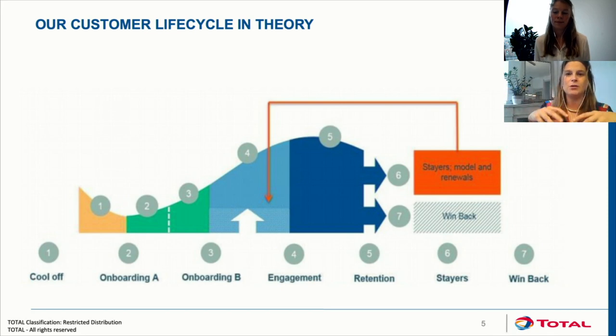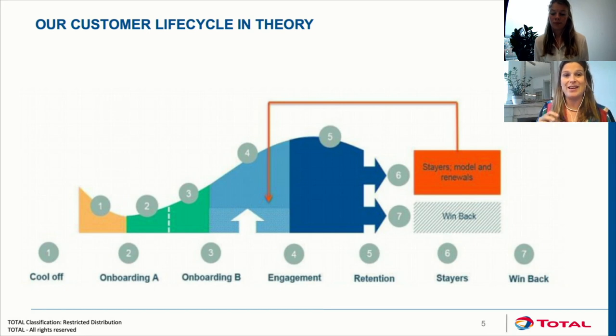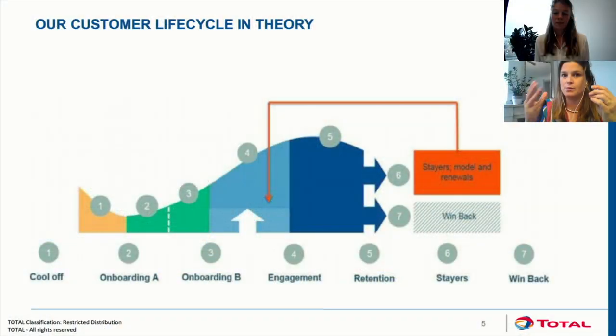In the engagement phase, we build a relationship with our customers — the first errors have hopefully been smoothed out. The next step in the customer lifecycle is retention, where the contract almost ends and we want to offer a renewal. If they renew, they go back to engagement. We consider this a successful customer journey. Unsuccessful is when they move from retention to win-back and switch to another supplier.